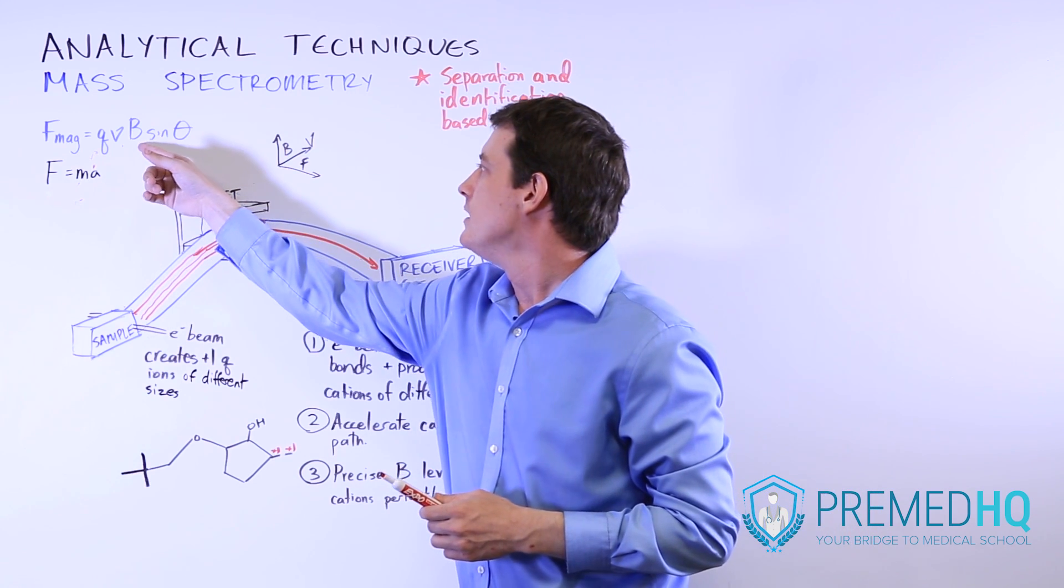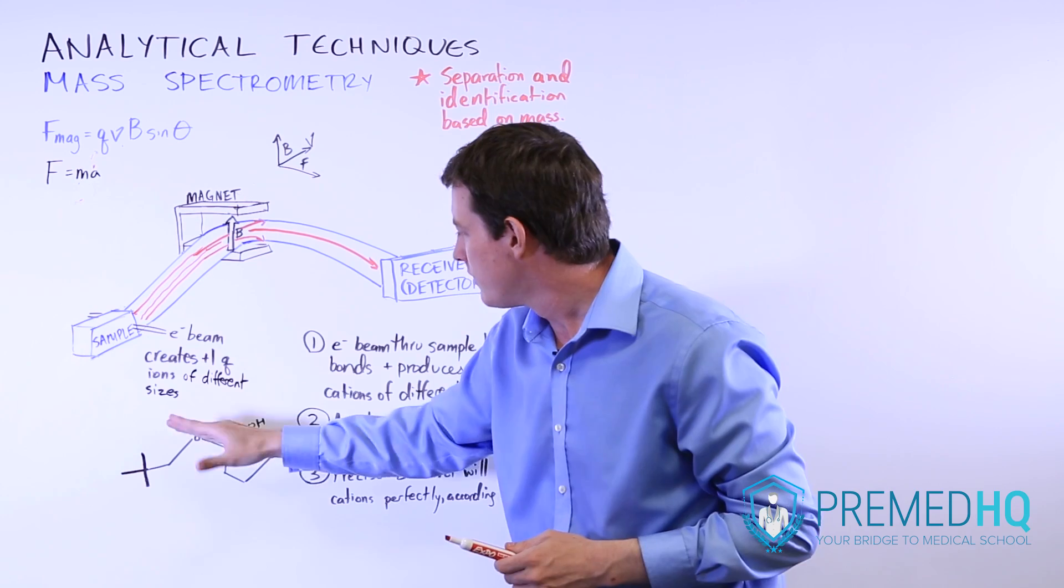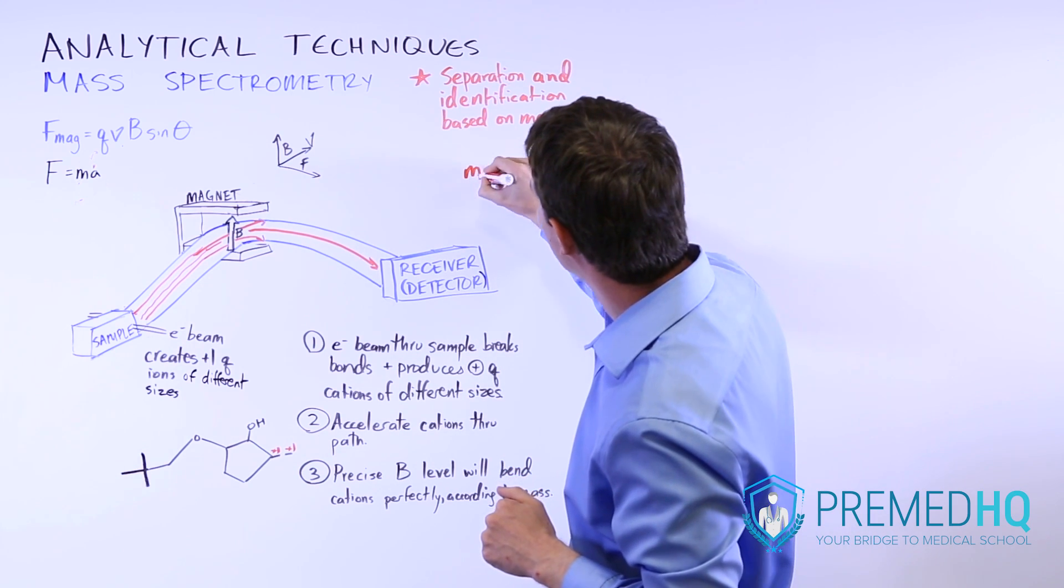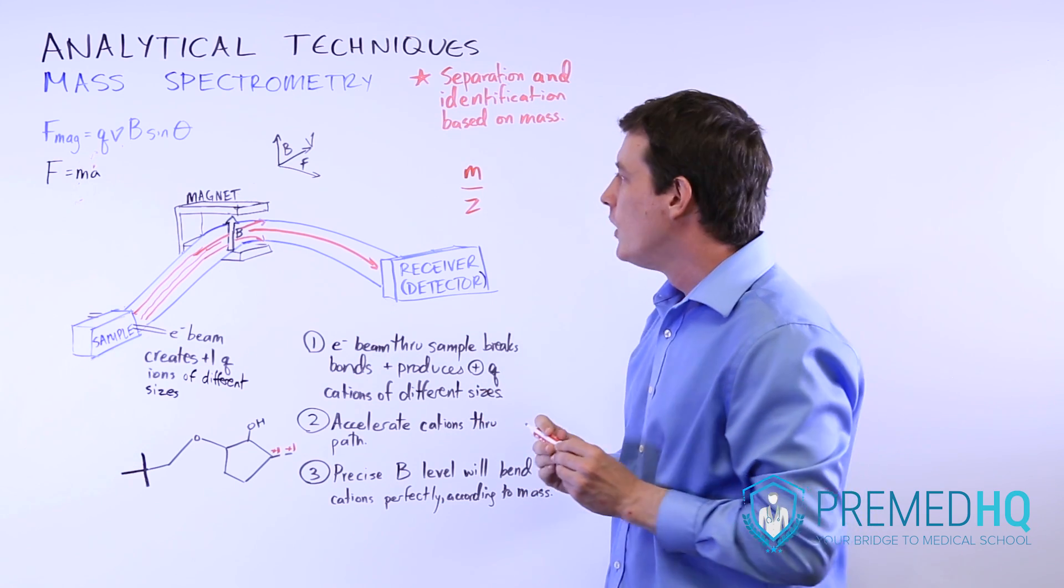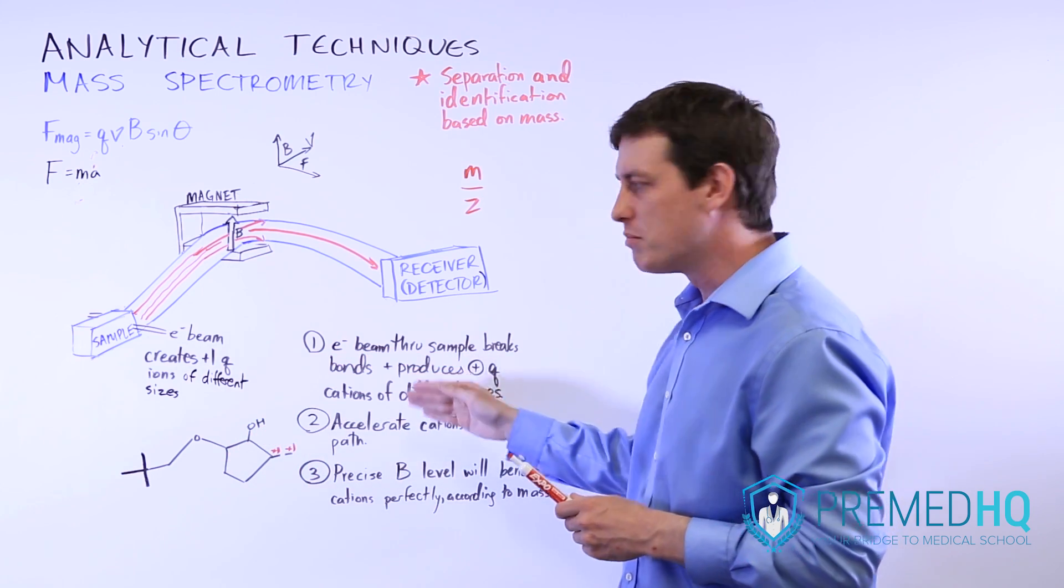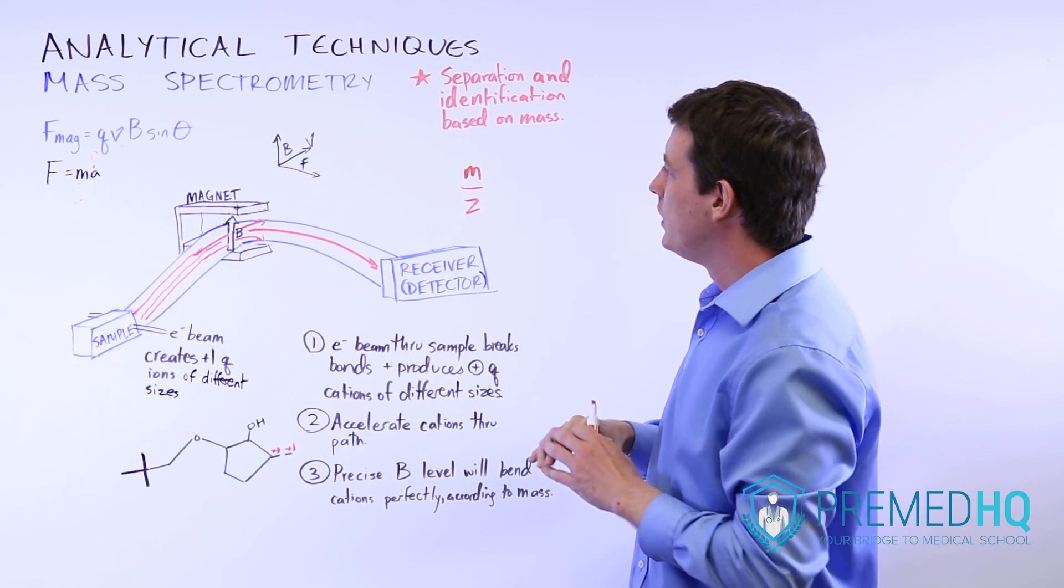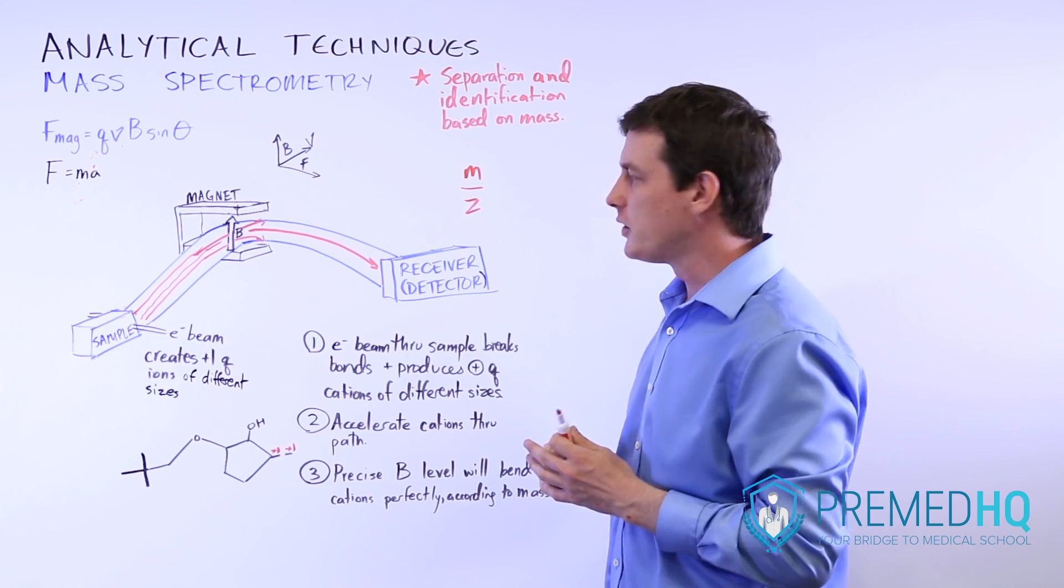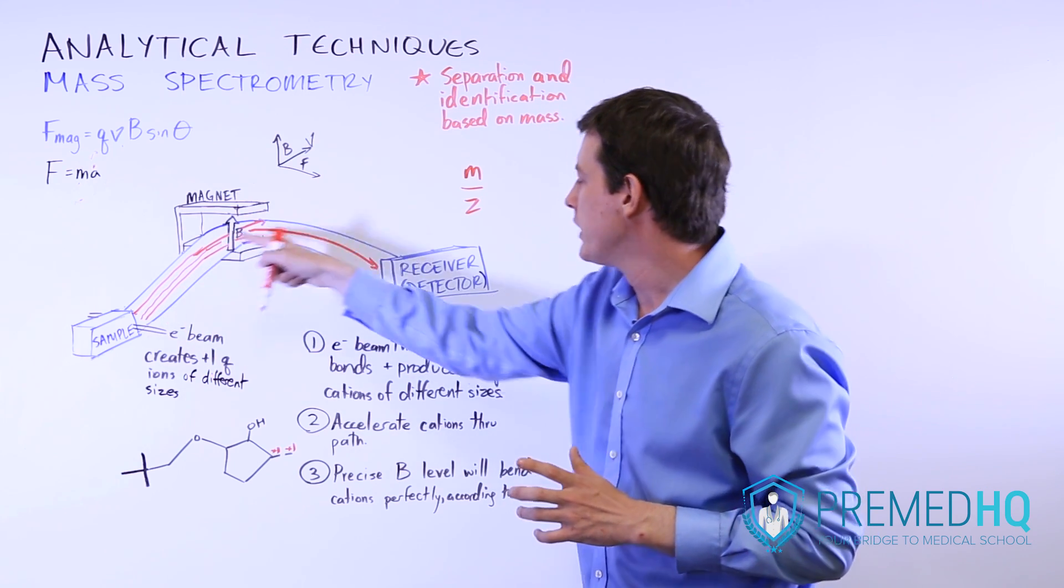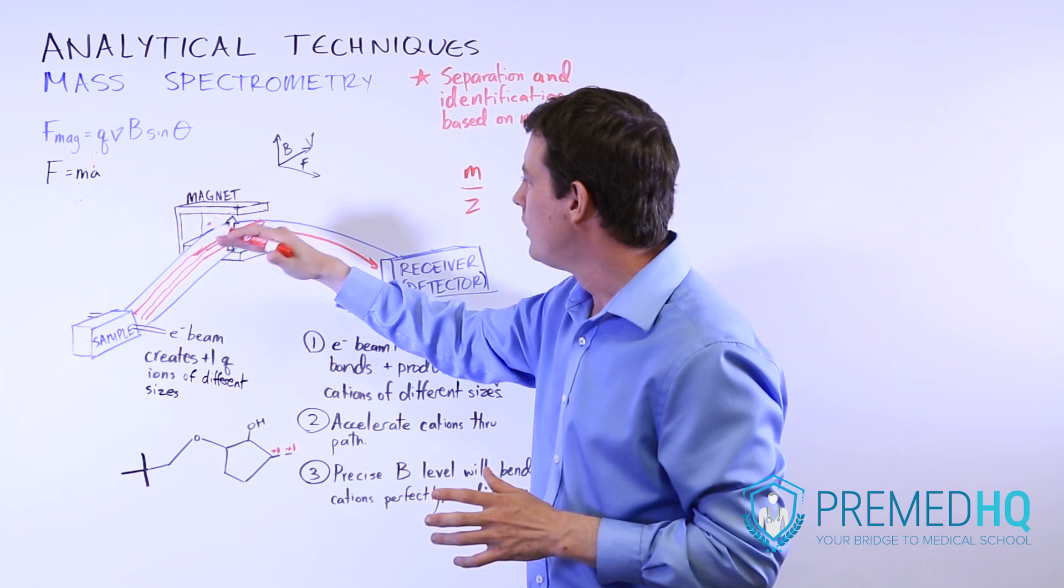That means that the strength of the magnetic field is proportional to the mass of the component of our compound that is recording that event. That allows us to get to something called the mass to charge ratio, M over Z, which is something you might encounter when you're dealing with mass spectrometry. Z is the charge and the charge will always be one for any of these cations that we produce by shooting that electron beam through the sample. The mass to charge ratio will vary depending on how massive the compound is. You'll have a small mass to charge ratio when you're dealing with just protons. That will be the smallest magnetic field strength that records any event whatsoever at our detector or receiver.